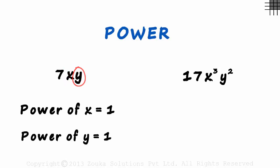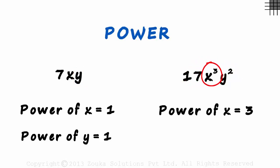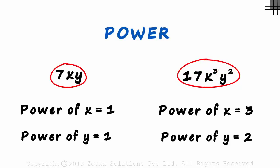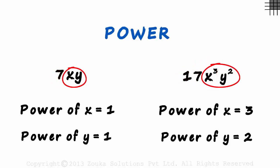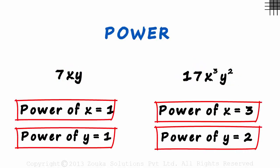Now look at the powers of variables of the second term. The power of x is 3 and the power of y is 2. Both these terms have the same variables, x and y, but the powers of each of the variables are different.